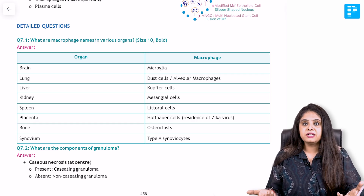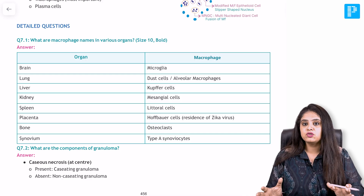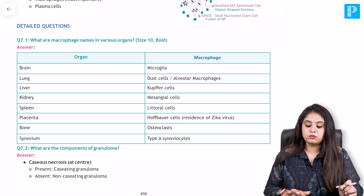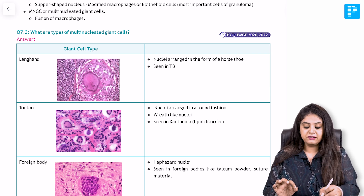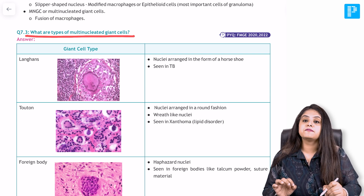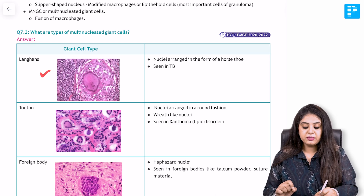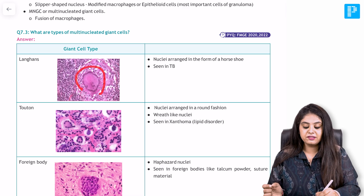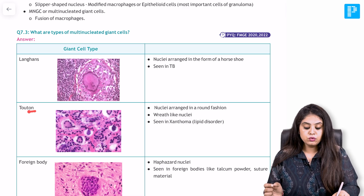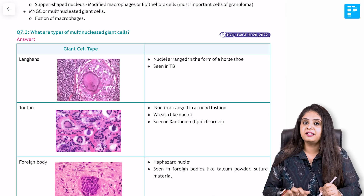If you want to revise a topic that has many image-based questions, all the images are in a tabular format. For example, to revise giant cells, there's a question asking what are the different types of multi-nucleated giant cells, and every giant cell with its image, description, and associated disease is given. The Langhans giant cells are seen in TB; the Touton giant cells with a ring-like arrangement are seen in lipid disorders like xanthoma.